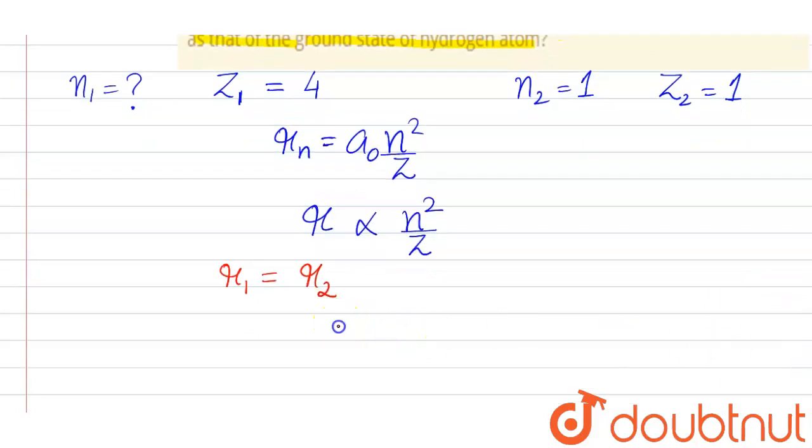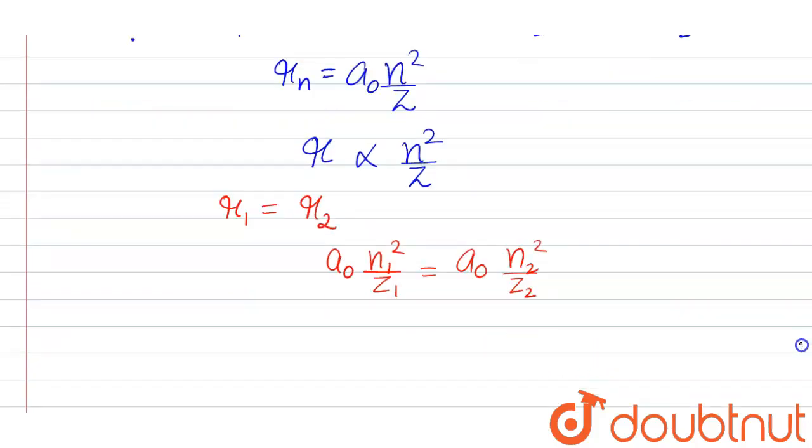So, that means A₀ N₁ square upon Z₁ equals to A₀ N₂ square upon Z₂. Now, cancel out A₀ with A₀, here N₁ square upon 4 is equal to 1 square upon 1. So, that means N₁ square will be 4.